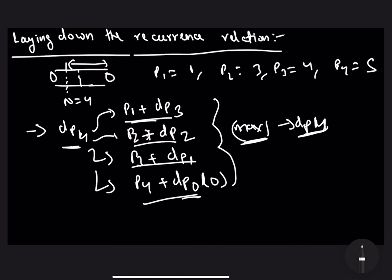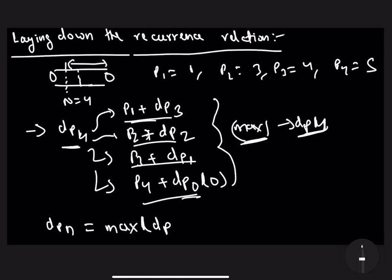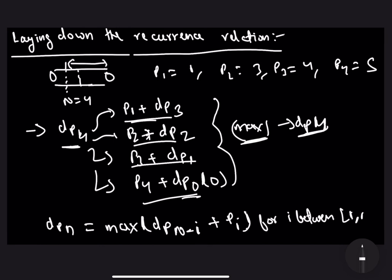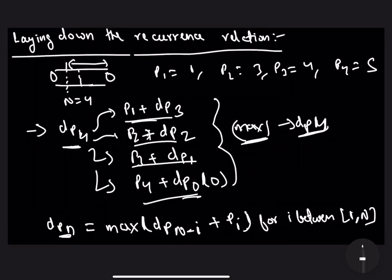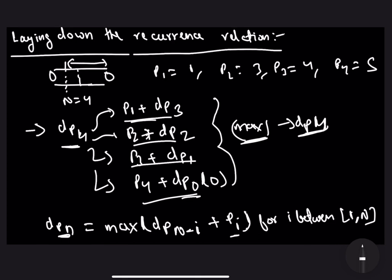Generalizing this to any value, DP[N] = max(DP[N - i] + P[i]) for i from 1 to N inclusive. This means for all possible rod lengths i that we can chop out from the rod of length N and sell directly, we find the value of i that gives the maximum price. The price for rod of length i is P[i], and the price for the remaining length is DP[N - i]. This recurrence considers all possible ways to chop the rod, so we get the actual maximum value.